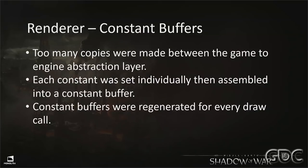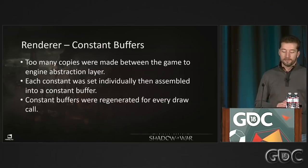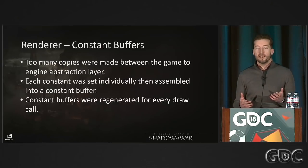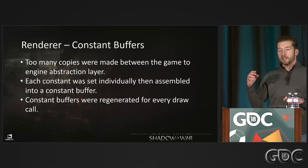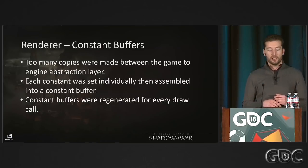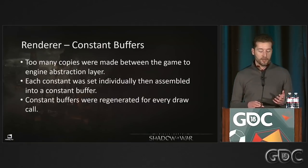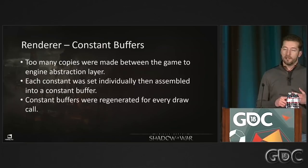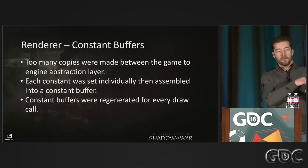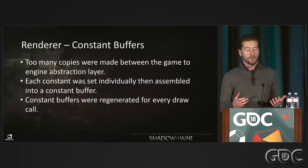When we first profiled the renderer at 90ms, we noticed that in Shadow of Mordor we never used named constant buffers — it was still cross-gen, spanning D3D 9 on last-gen and D3D 11 on current-gen. Everything was set as individual constants, built into a global constant buffer, and sent to the GPU every frame. Worse, we had multiple copy layers: game code set a value, the platform-agnostic renderer copied it, the platform-specific renderer copied it again, and then at draw call generation we'd allocate a constant buffer, memcpy that value in, and upload it. All those memcopies really add up.